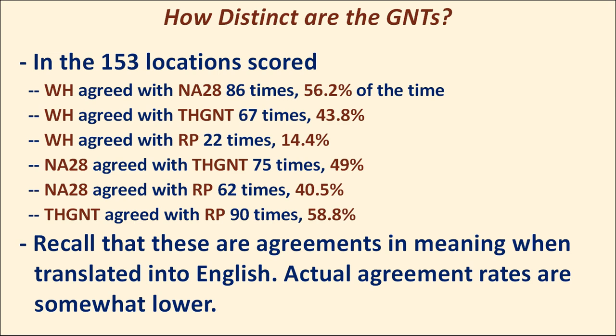You may hear things like that on the internet, but it's simply not true — NA28 is a distinct Greek New Testament from Westcott and Hort. The Tyndale House Greek New Testament agreed with Robinson-Pierpont 58.8%, quite a lot more than Nestle-Aland. The evangelical scholars behind Tyndale House seem more favorable to Byzantine readings than NA28, which in turn is more favorable to Byzantine readings than Westcott and Hort. Note that these are agreements in meanings when translated into English; actual agreement rates are probably somewhat lower because of spelling, word order, and non-translatable articles.